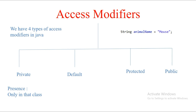It does not extend the presence to any other classes apart from the same class in which it is declared. If it is default, then the visibility of 'animalName' remains only within that package, and if you go outside that package, 'animalName' becomes invisible and a compile-time error will happen.